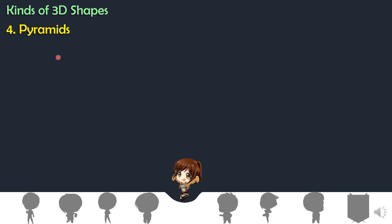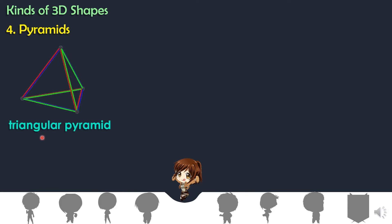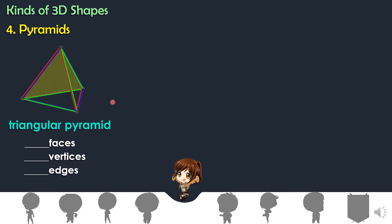Number 4, we have the pyramids. There are many kinds of pyramids. First, we have the triangular pyramid. Let us find out how many faces, vertices, and edges it has. Counting the faces: one, two, three, four. Triangular pyramid has four faces.